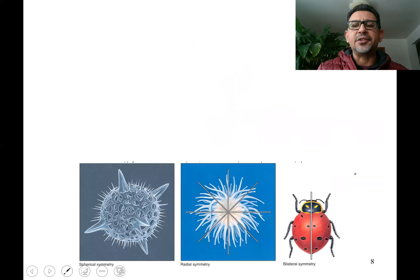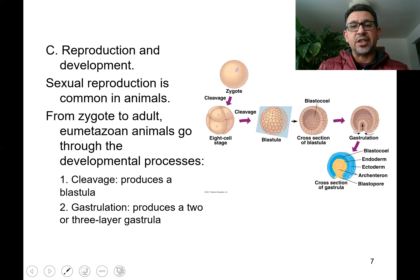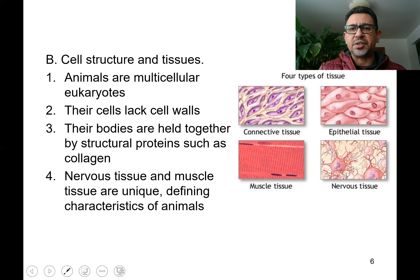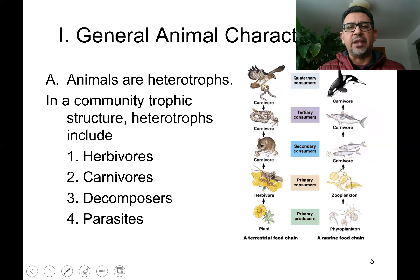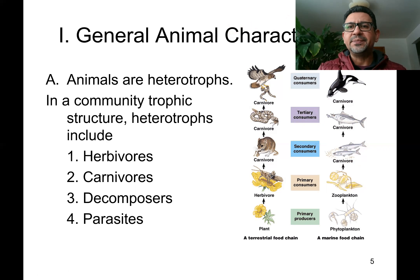In review, animals reproduce either by asexual means — like budding or fragmentation — or sexually, taking the body through various stages of embryonic development. Animals have sophisticated tissues with specific functions that can eventually form organs. There are no cell walls surrounding animal cells, but support comes from specialized tissues. All animals are heterotrophs, meaning they must eat other things to obtain the energy necessary to power their daily activities. I will continue exploring general concepts about animal body and classification in another video.